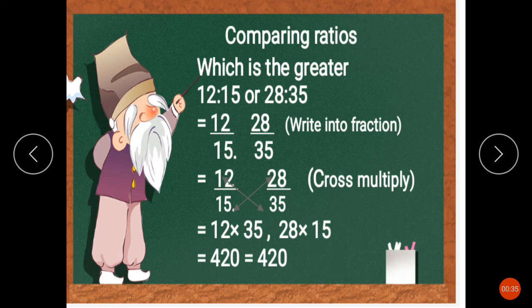First, we will write into fraction. The first step is write into fraction. So 12:15 converts into fraction 12 over 15. Next, 28:35 is written into fraction as 28 over 35.